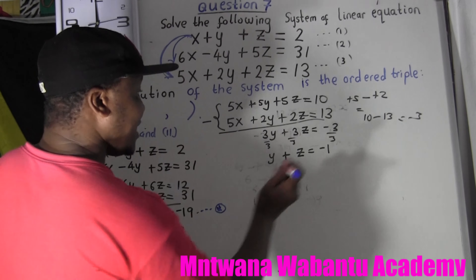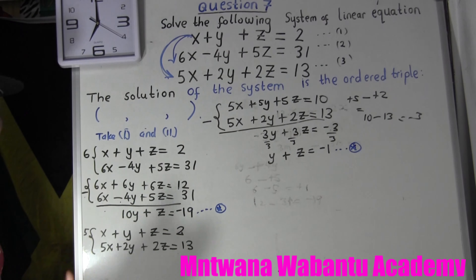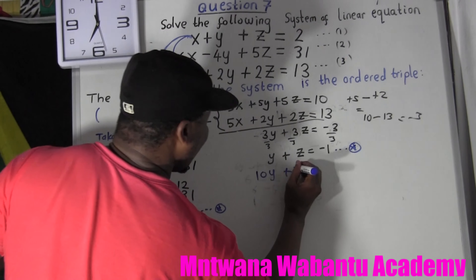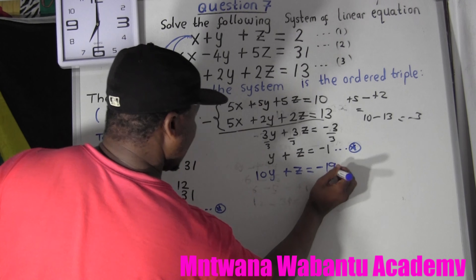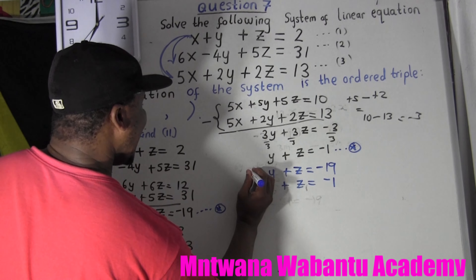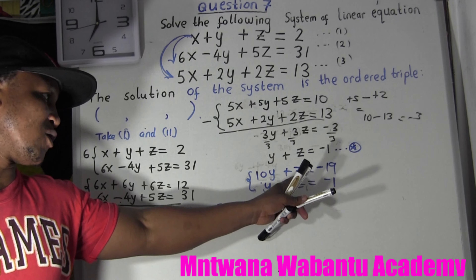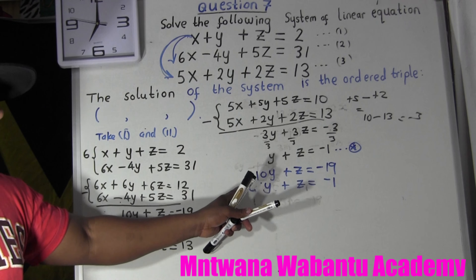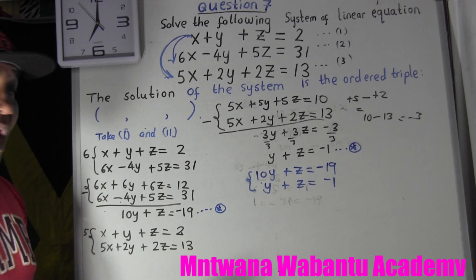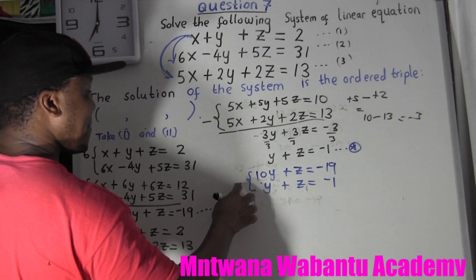Now I take star one and star two and solve them together. Star one: 10y + z = -19. Star two: y + z = -1. I'll eliminate z since the z-coefficients are both 1 — I can just subtract directly without multiplying.